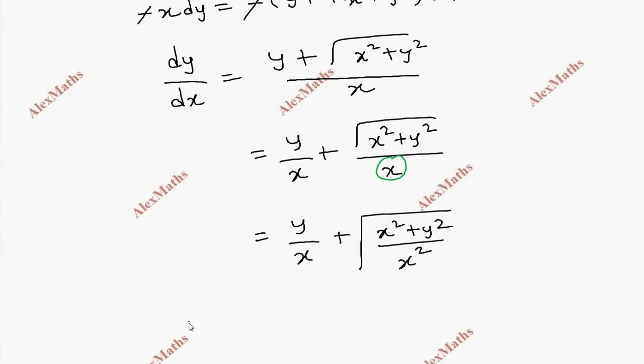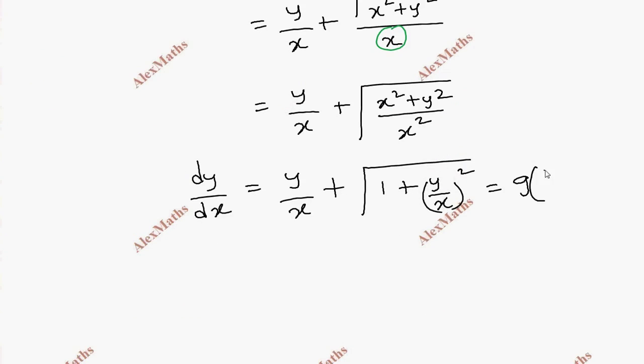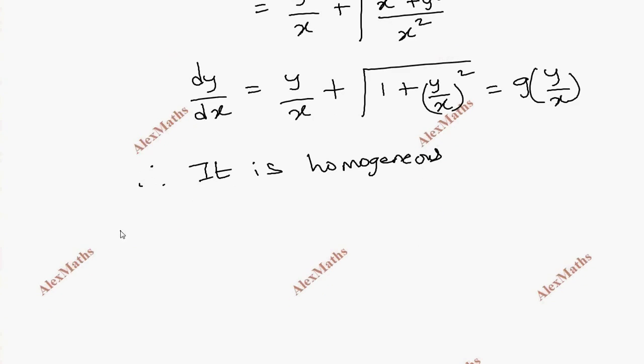Inside the root: y squared divided by x, plus root of y squared by x squared. It is a function in terms of y over x. Therefore, it is homogeneous. Let v equal y by x, so y equals vx.